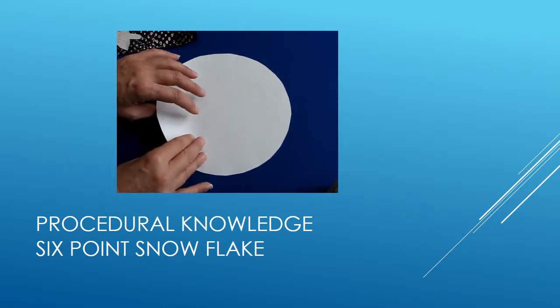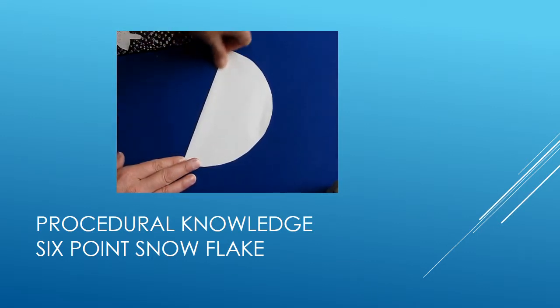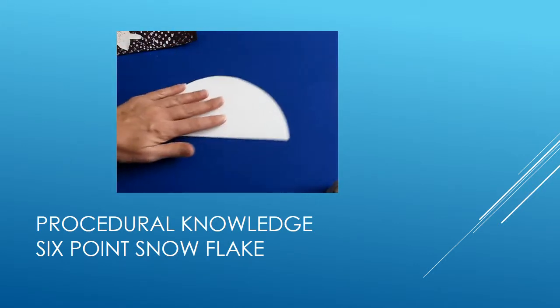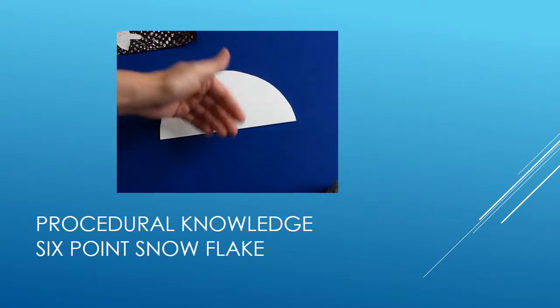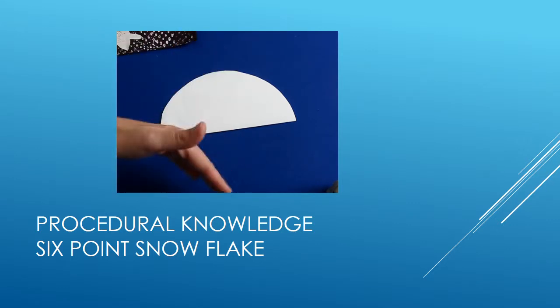Now how you create your six pointed snowflake is first you fold your circle in half to create this new shape, this new shape is a semicircle. Now what you need to do now is fold it into three sections so that when you unfold it you will eventually have a six pointed snowflake.